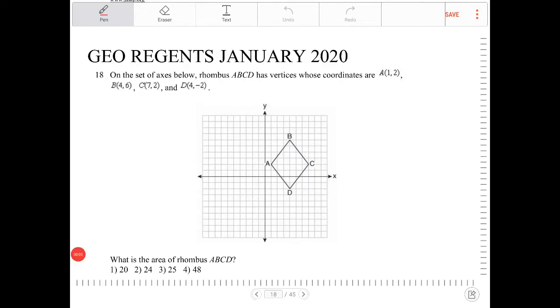On a set of axes below, rhombus ABCD has vertices whose coordinates are given. I'm not going to read them, but it's already graphed for us, which is super convenient. What is the area of rhombus ABCD?